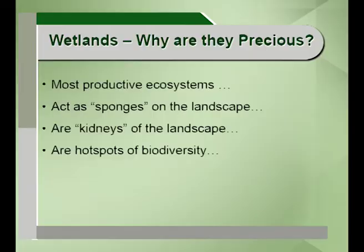Wetlands are cradles or hotspots of biodiversity, supporting numerous flora and fauna globally. For example, 20 percent of the biodiversity in India alone is found in freshwater wetlands. In India, 70 percent of the wetlands are under paddy cultivation and around 58.2 million hectares is under wetland development. The great Indian bustard is found in the Thar desert or the desert wetlands of India.